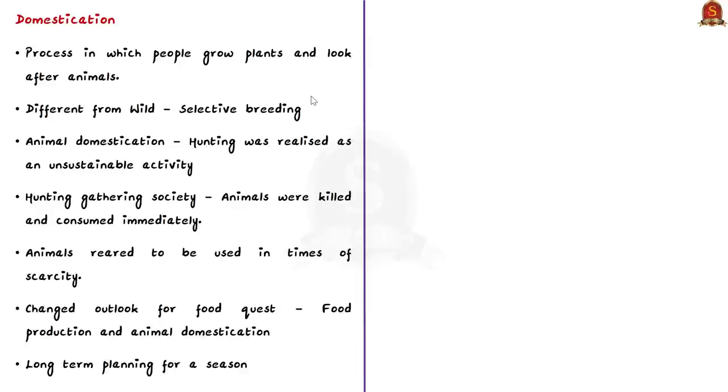Domestication is a process in which people grow plants and look after animals. Generally, the choice of plants and animals being domesticated will depend on different climatic conditions prevalent in a particular region. The domesticated animal will be different from the wild animal of the same species because people do selective breeding when it comes to domestication.